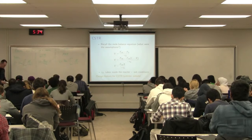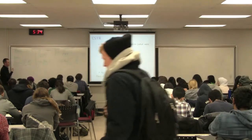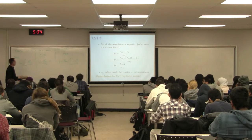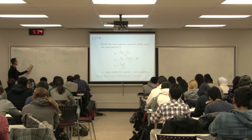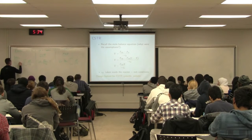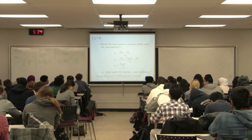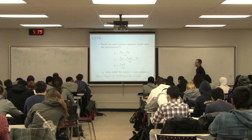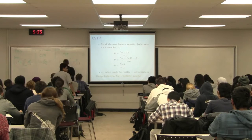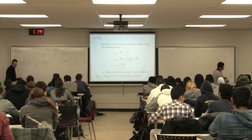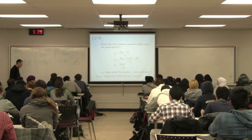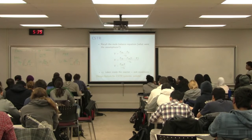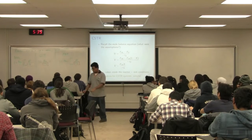One key observation is that the denominators of all three expressions have the reaction rate, minus RA, as the main expression. For the batch reactor, making the assumption of constant volume, what comes out of the integral is NA0 divided by the rate. You can see that rate dependence in the denominator of the design equation.